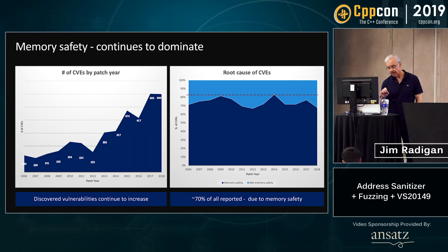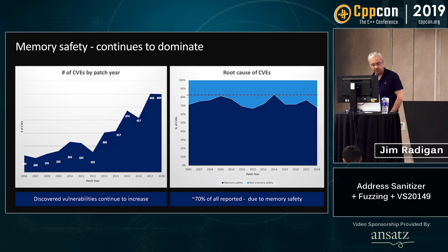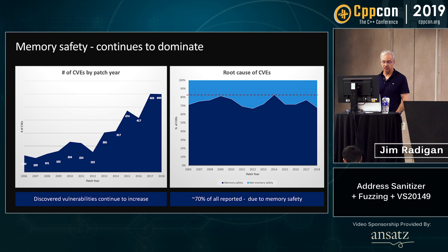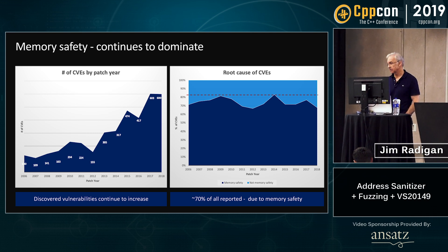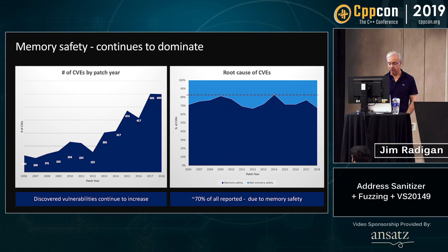Right now, the number of discovered vulnerabilities in Windows code is continuing to increase. CVE is a public database of computer vulnerabilities and exposures. If you look at that, 70% of that number is memory safety.